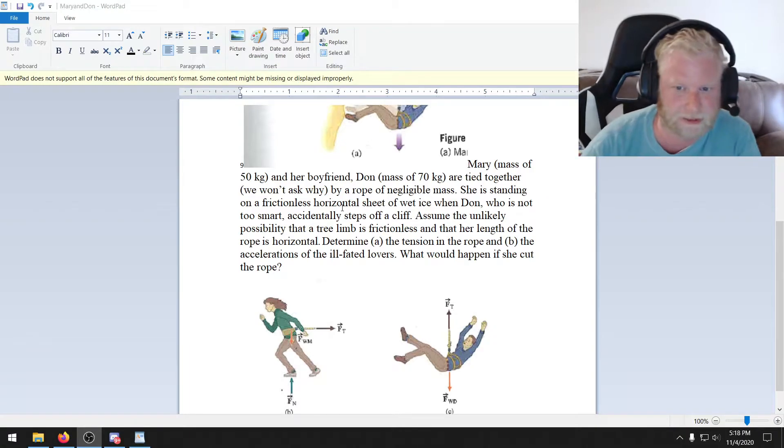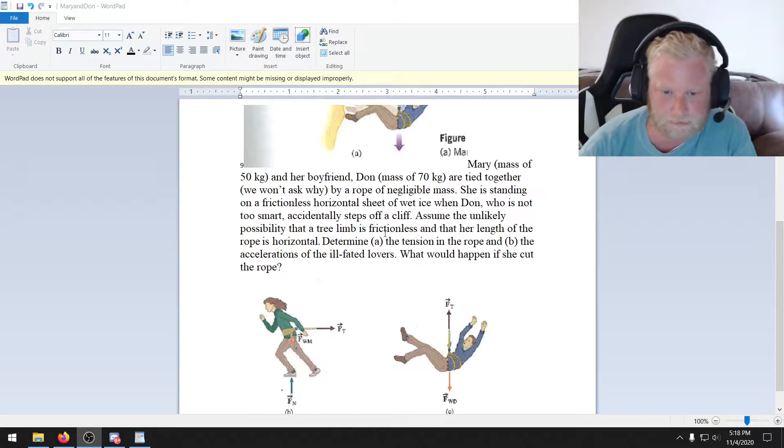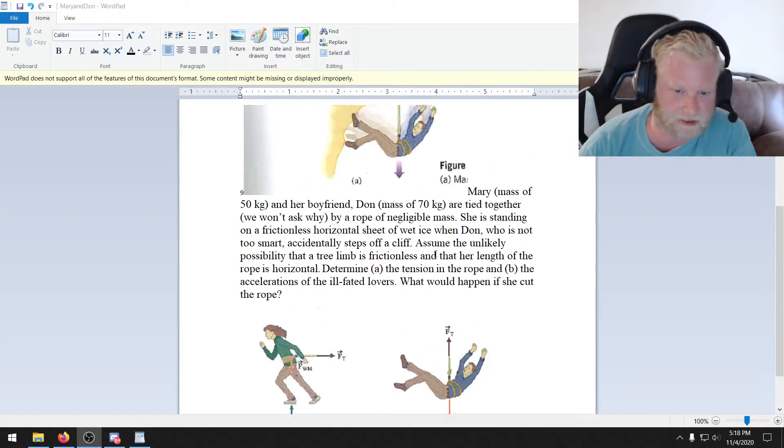Dawn steps off a cliff. Mary's standing on a frictionless horizontal sheet of ice. And assuming that the tree limb is frictionless, meaning assuming that this acts like an actual pulley, we want to determine the tension in the rope and the accelerations of the two. And then we want to know what would happen if she cut the rope.